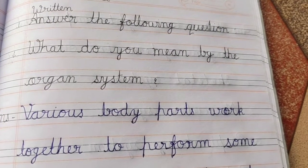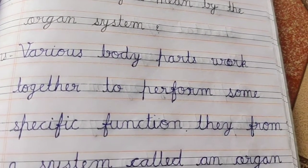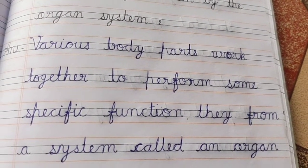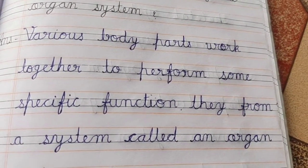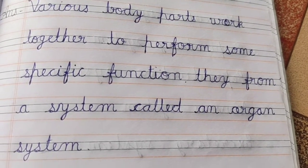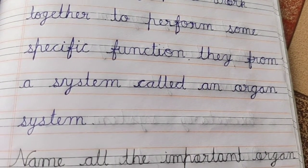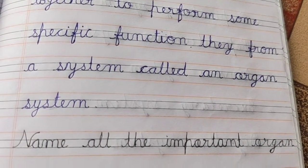First question is: what do you mean by the organ system? The body parts that work together to perform some specific function form a system called an organ system.